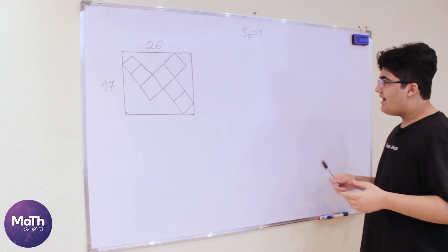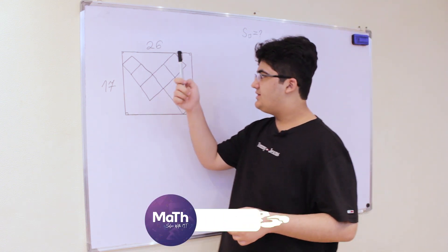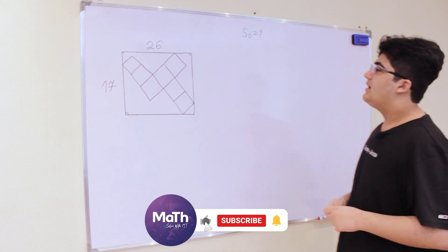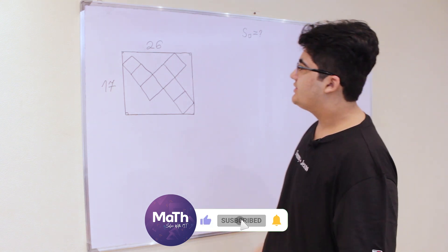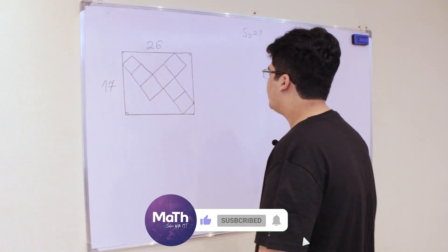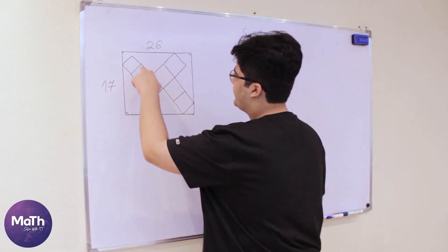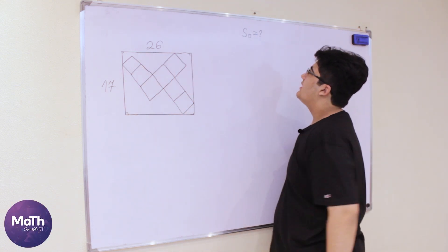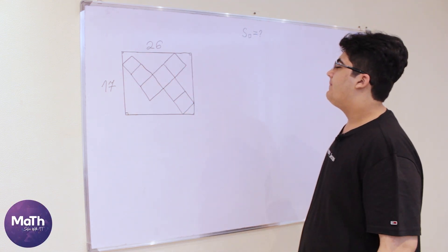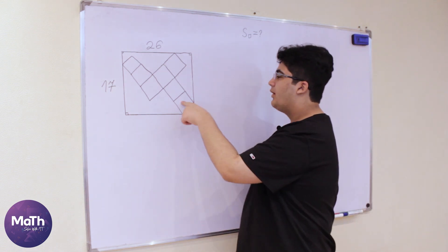So we have a rectangle with sides 17 and 26 and we have seven squares inside the rectangle. Seven equal squares and we need to find the area of one square.